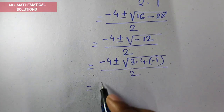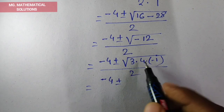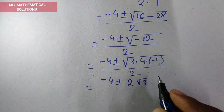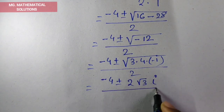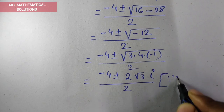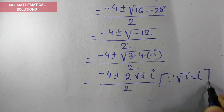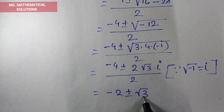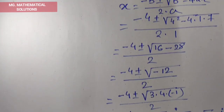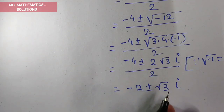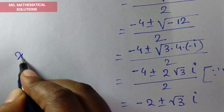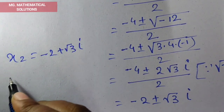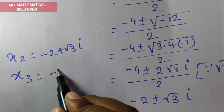√(−12) = 2√3 · i, where i (iota) = √(−1). So x = (−4 ± 2√3·i) / 2 = −2 ± √3·i. Therefore x₂ = −2 + √3·i and x₃ = −2 − √3·i.